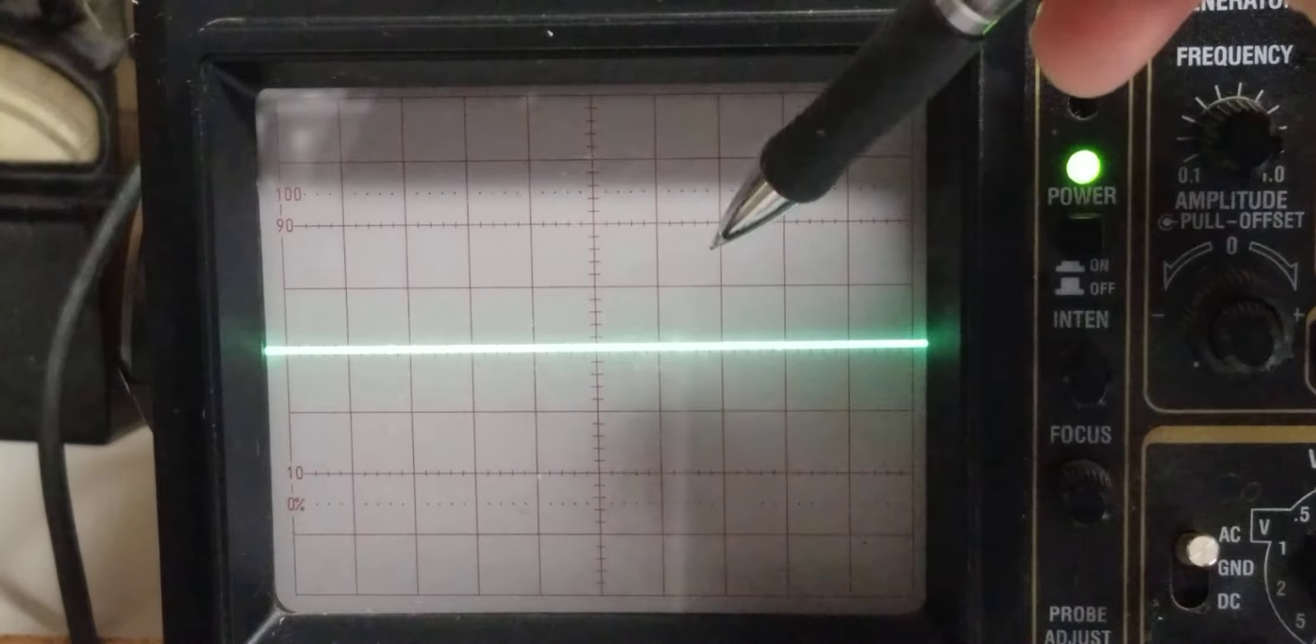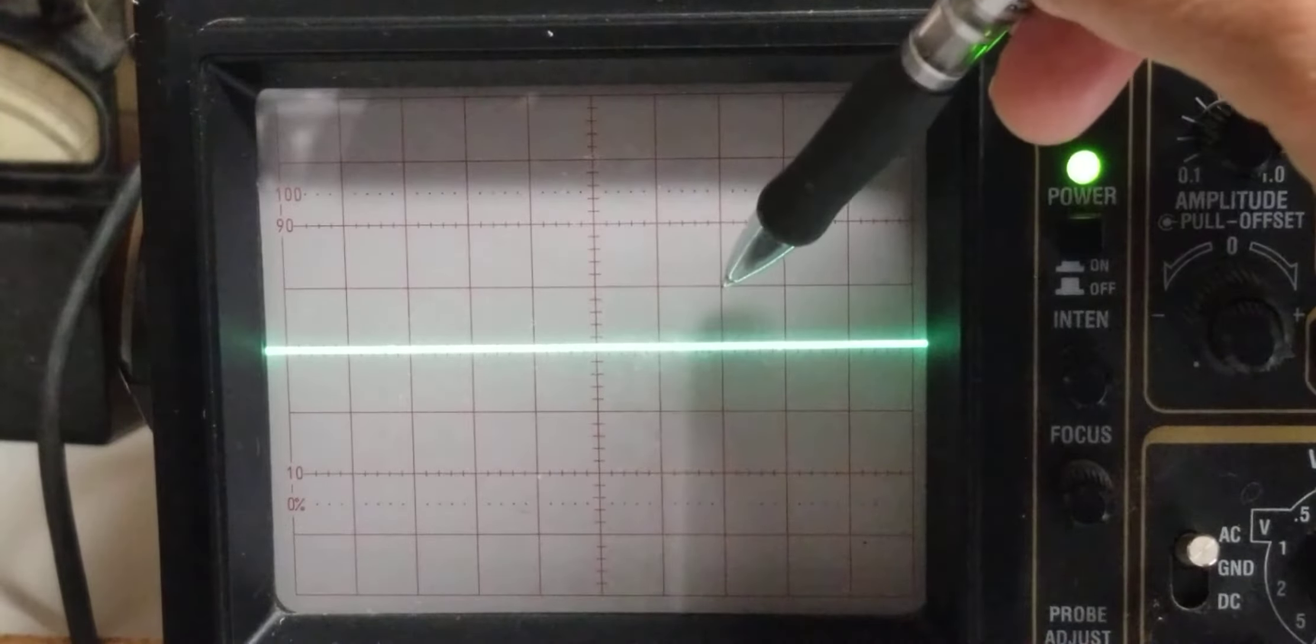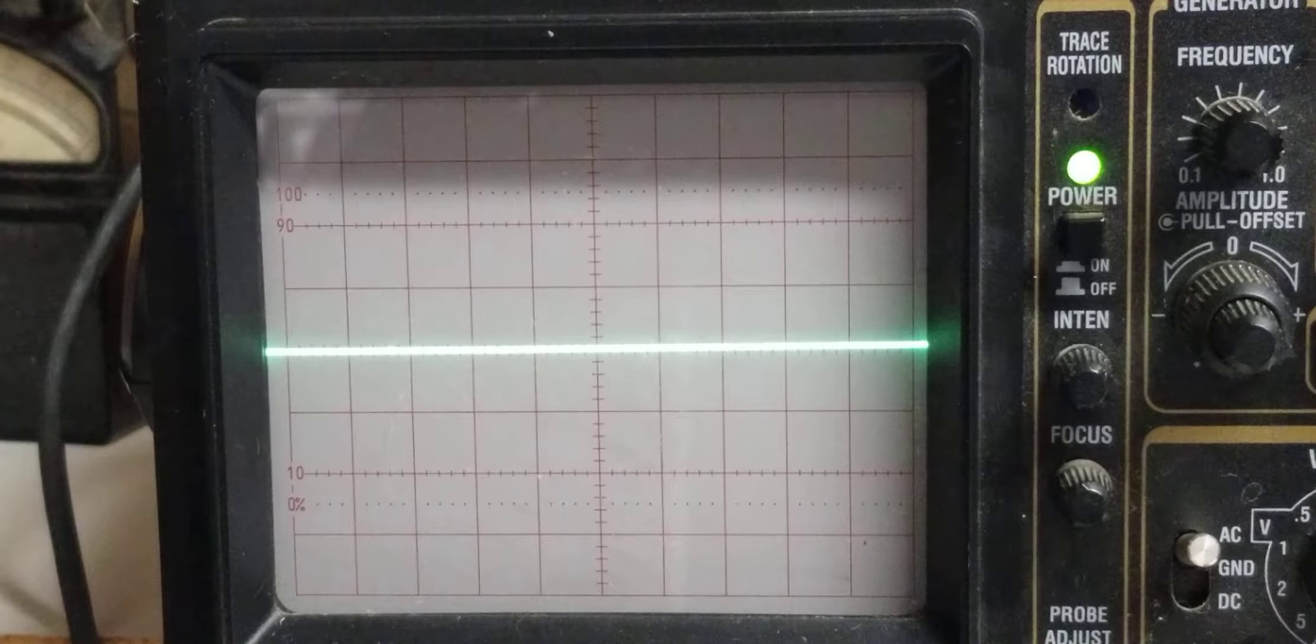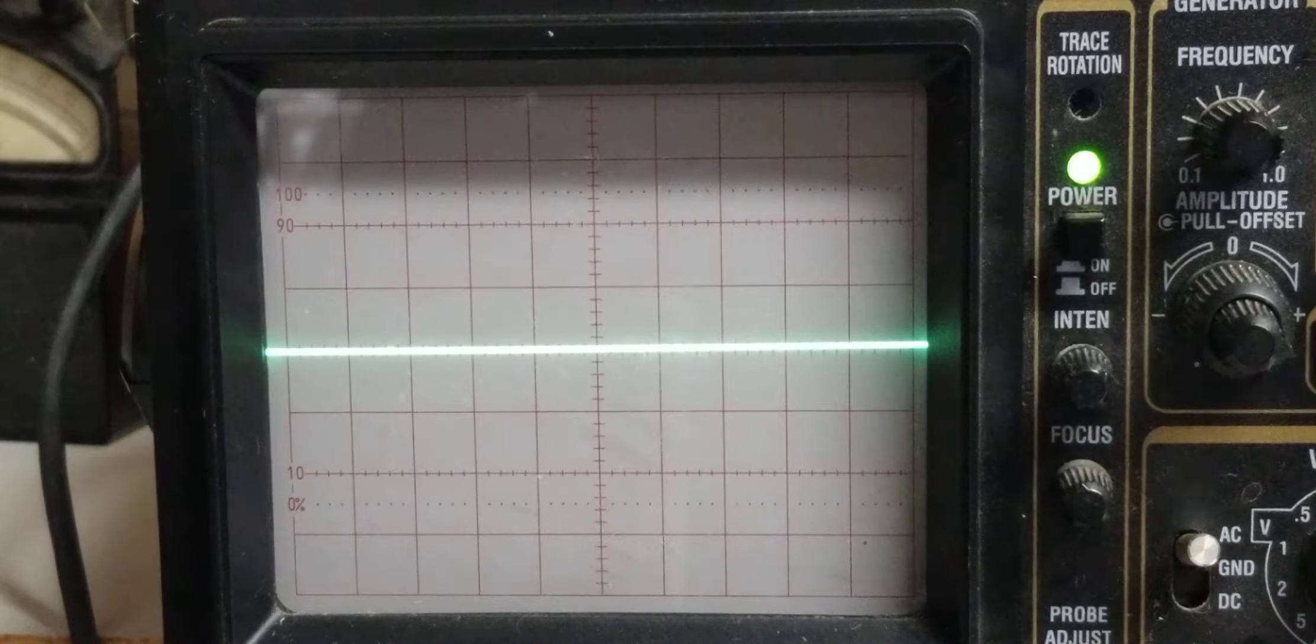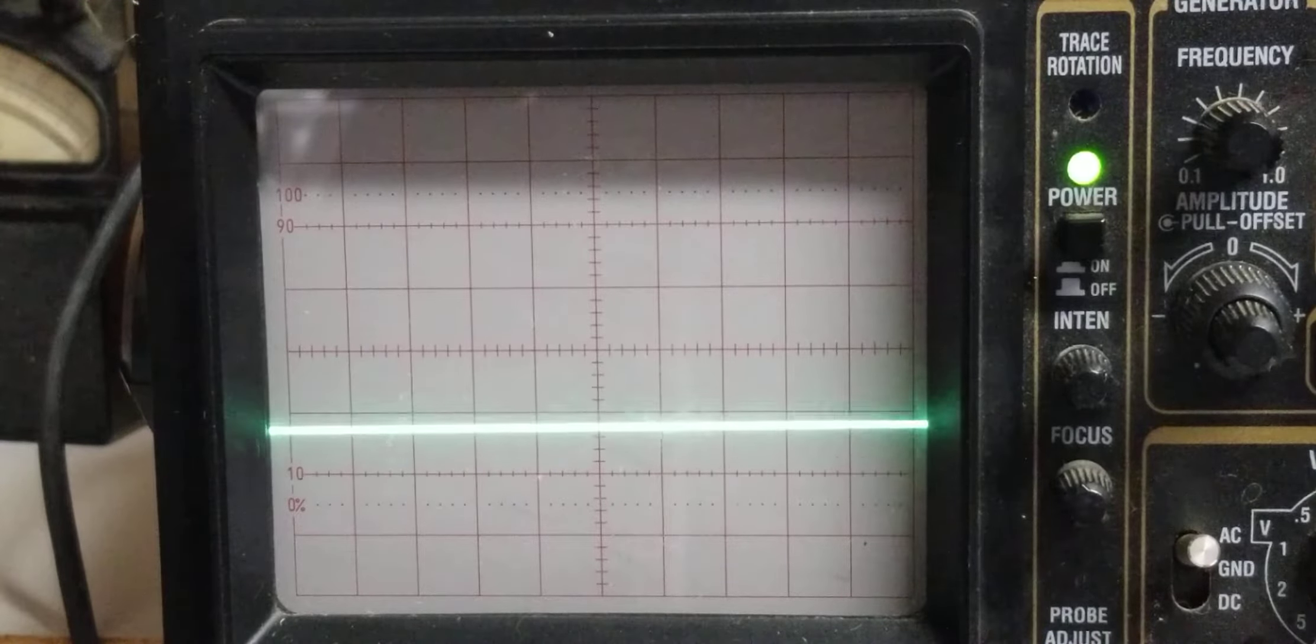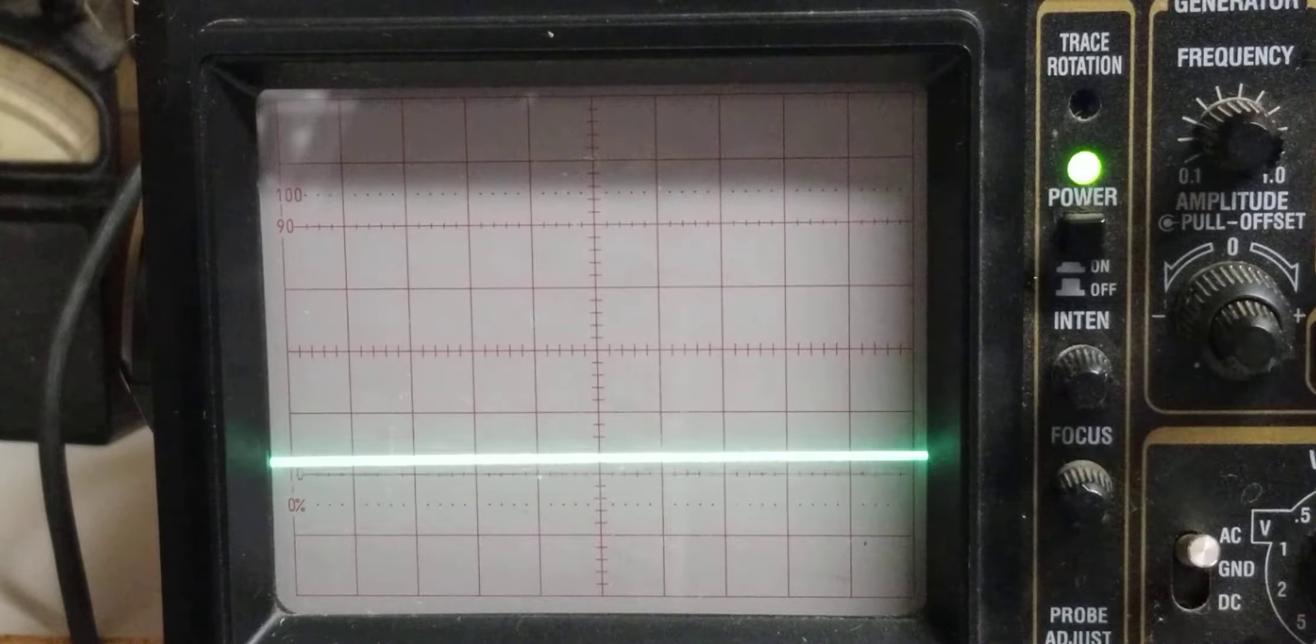If I adjusted my oscilloscope so that each division equals five volts, what would 10 volts look like? Ten volts would look like this, assuming this is zero: five, ten. What would negative 10 volts look like? Assuming that's zero, negative 10 would look like this: five, ten.